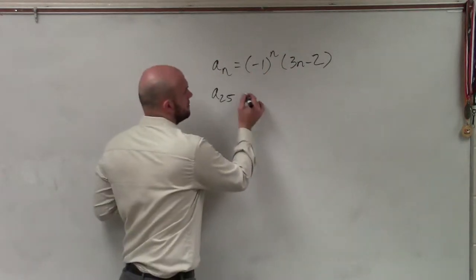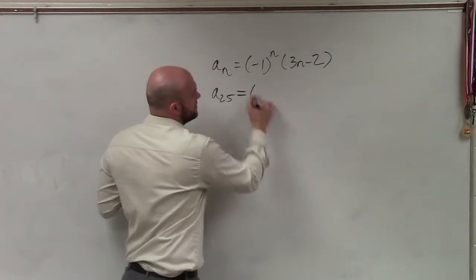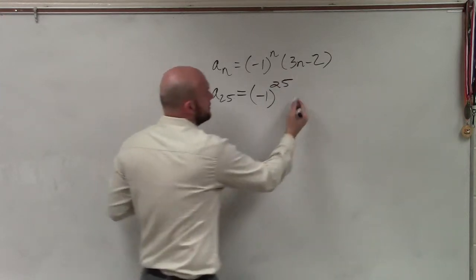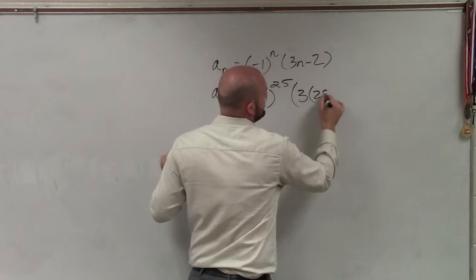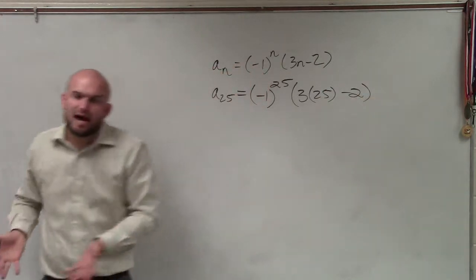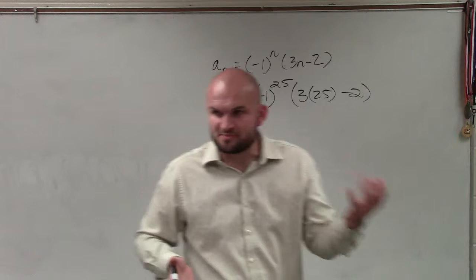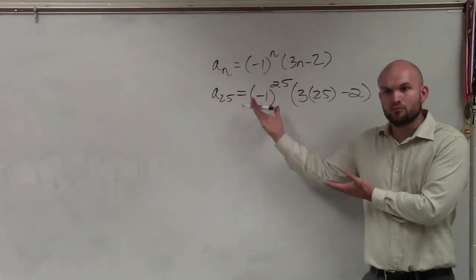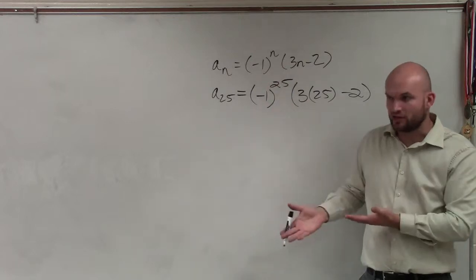I design my calculator and I can write a difference. Okay, so let's go and take a look. So I have negative 1 raised to the 25th. You understand that part? And then 3 times 25 minus 2. Does everybody understand how we are evaluating for a specific term in a sequence? Does this make sense how our n represents a number in sequence you plug that value in?